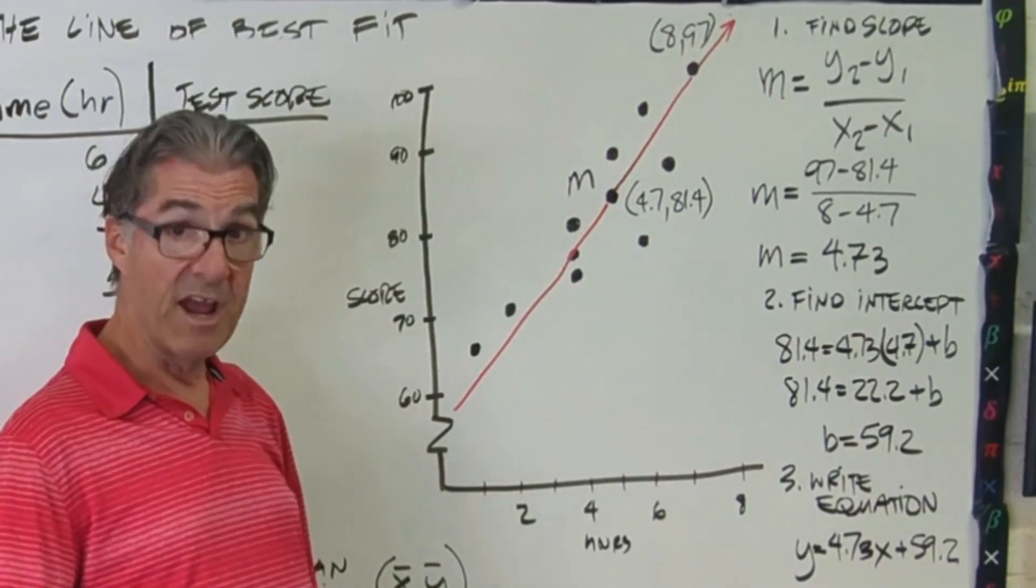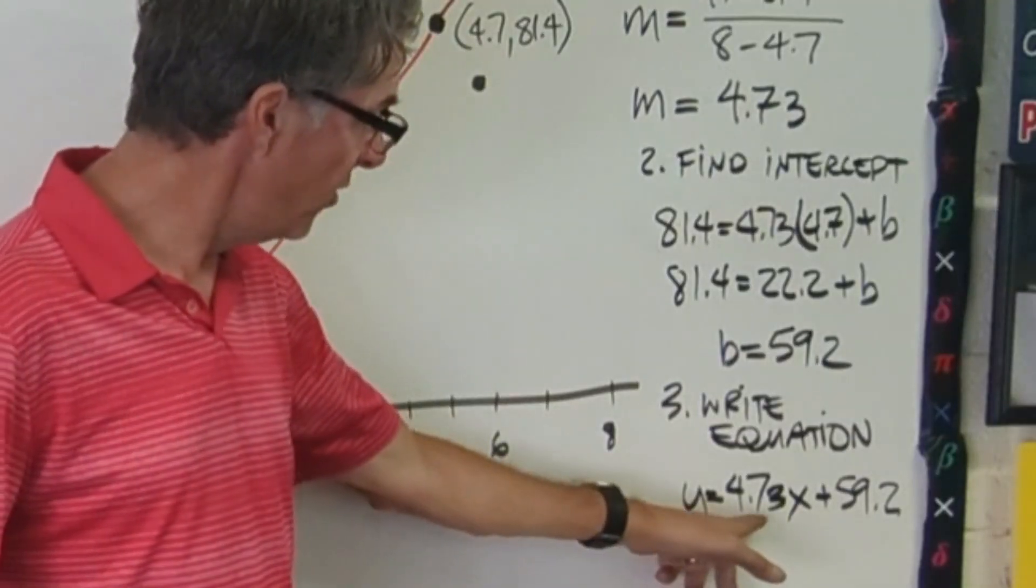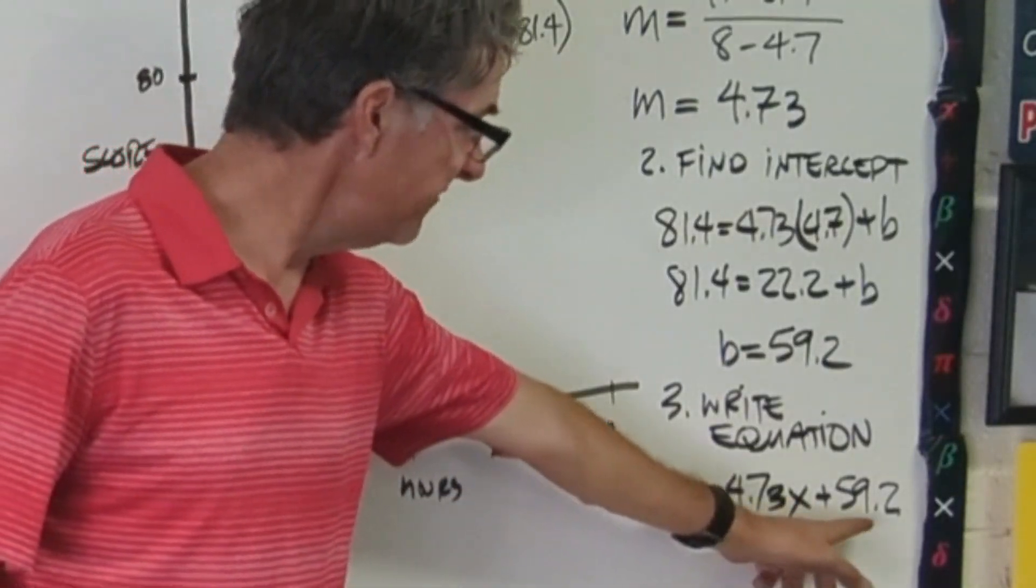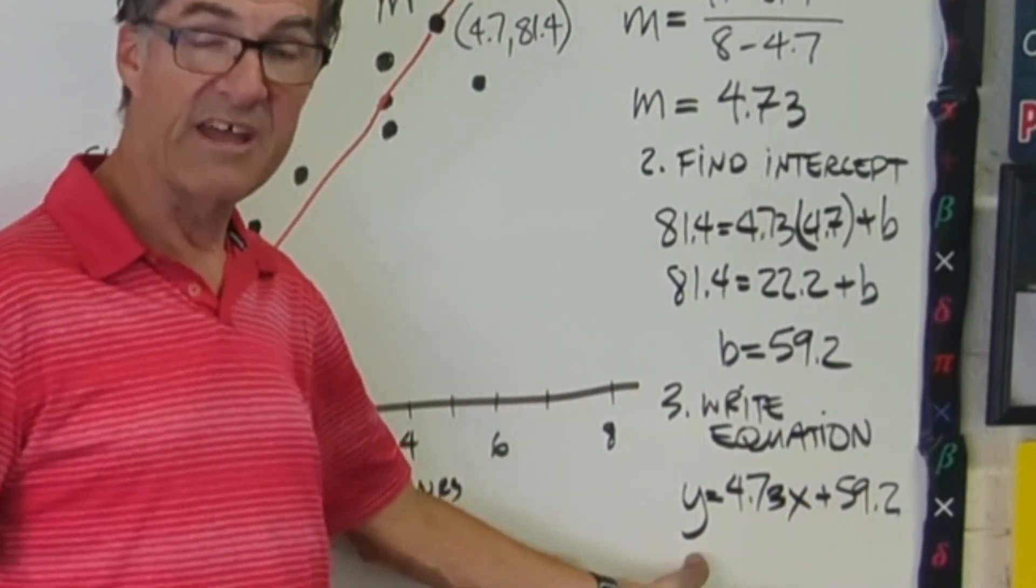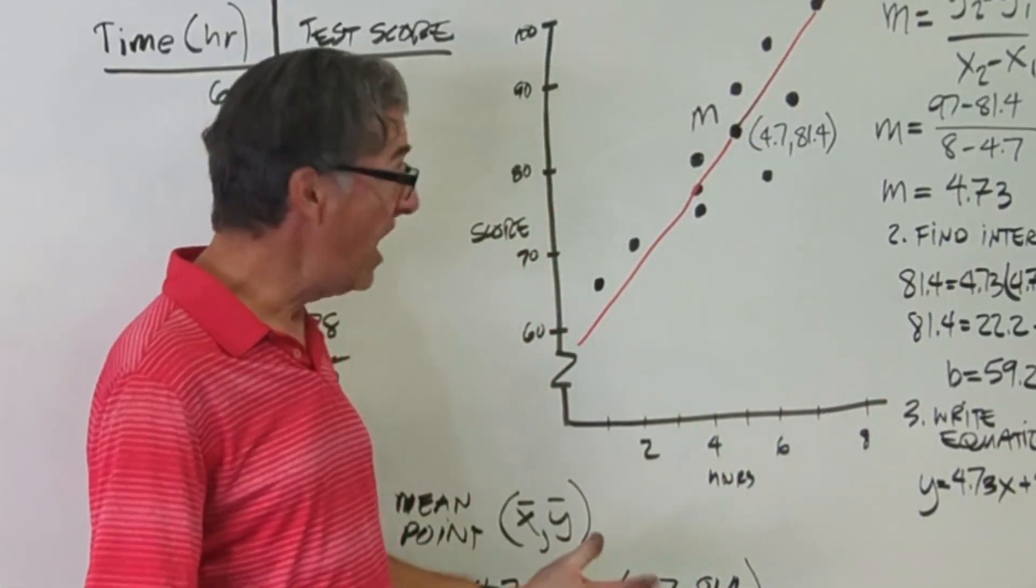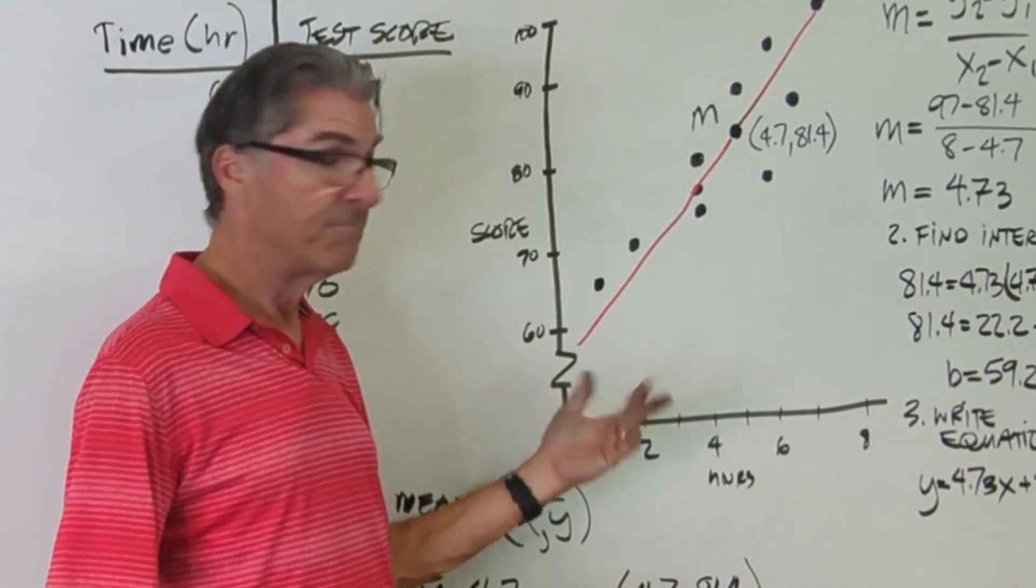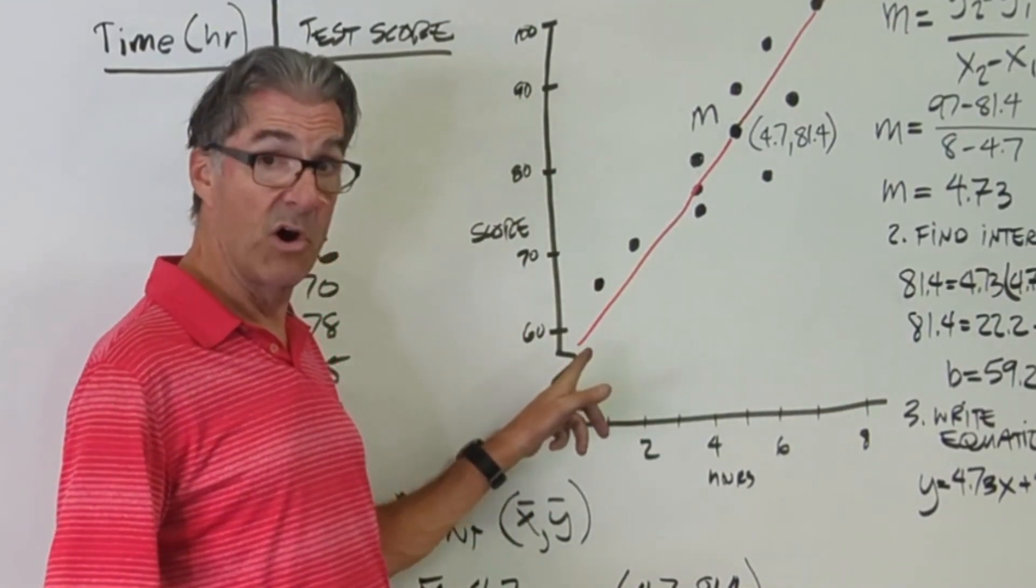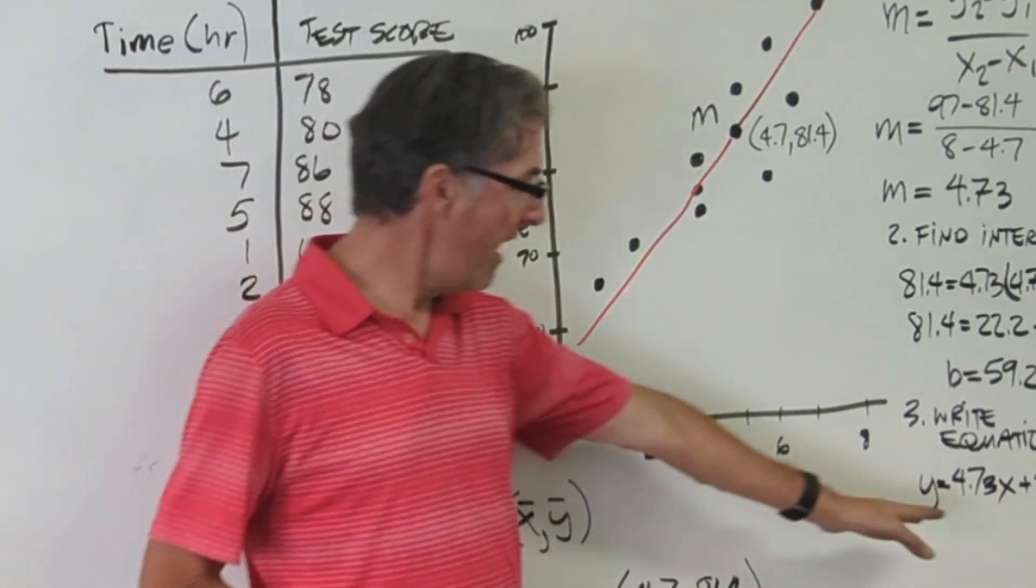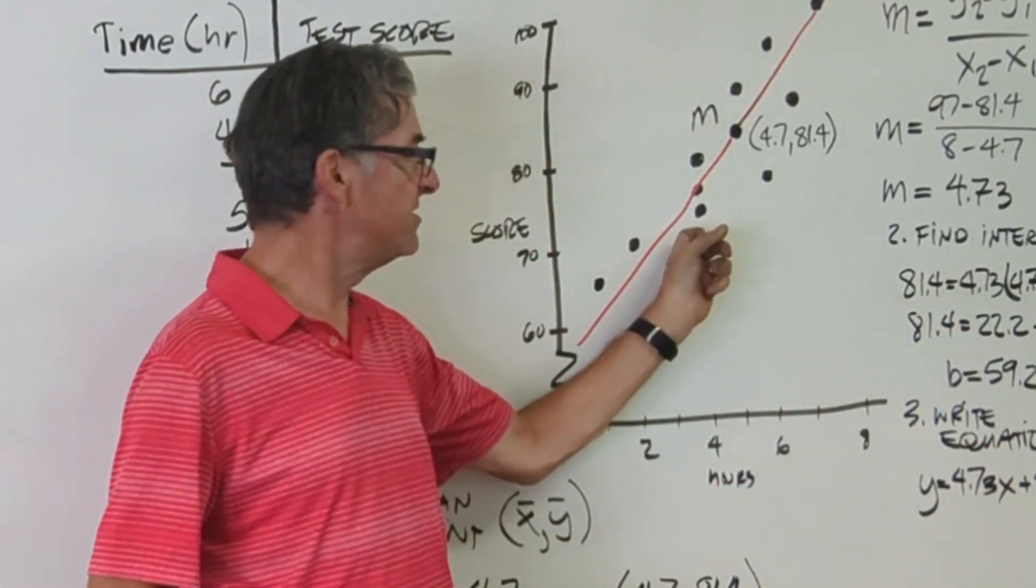So I've crunched my numbers, and I've isolated b, it's 59.2. And so now I can just simply write my equation, which is 4.73x plus 59.2, and that, of course, is y equals that. So now what we've got is we've got a nice scatterplot with a best-fit line imposed over that, and we now have an equation that describes that line.